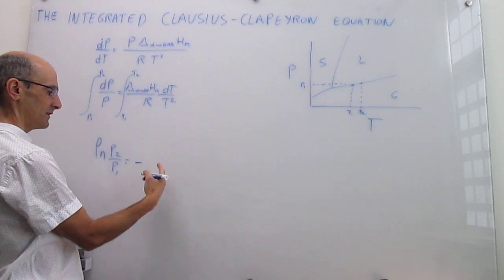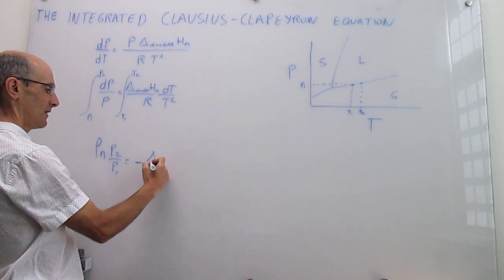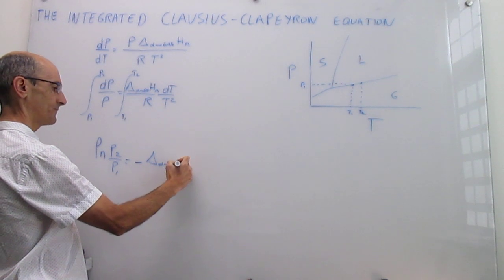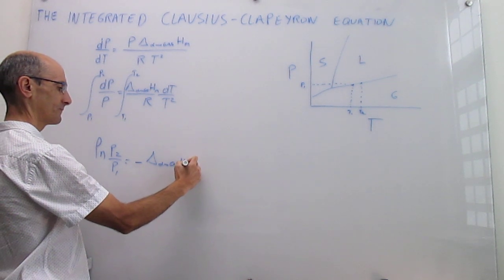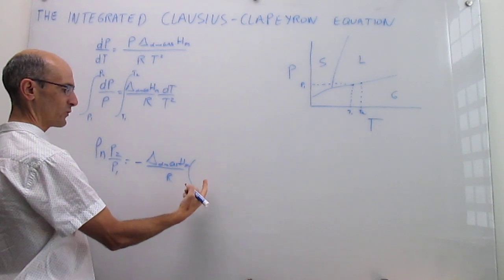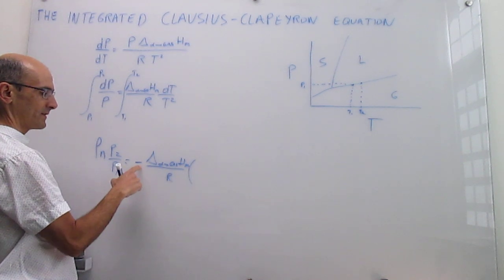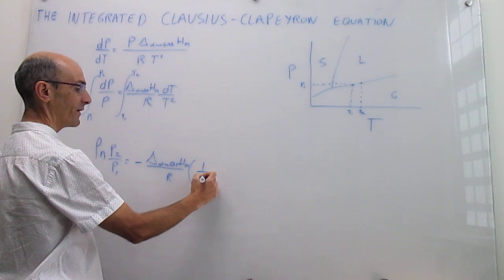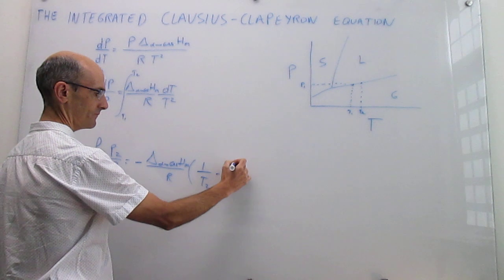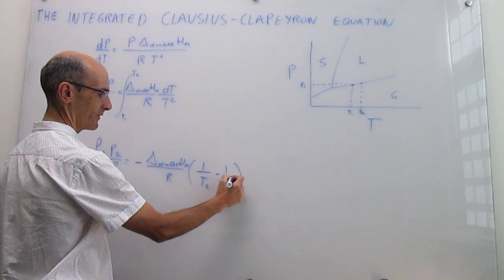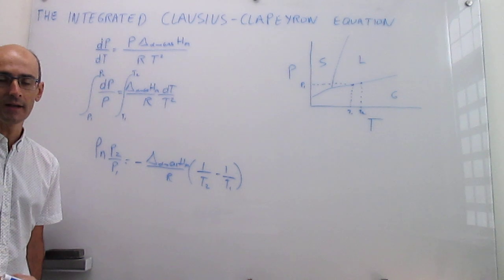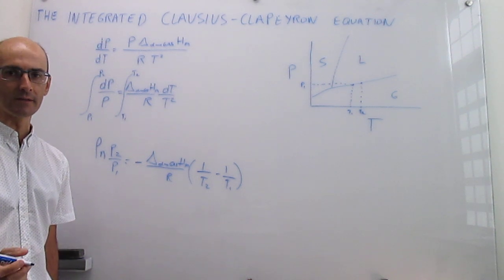The result is: ln(P2/P1) equals the change in enthalpy of the phase transition divided by R, multiplied by (1/T_final minus 1/T_initial) — with the minus sign already factored out. This is the integrated Clausius-Clapeyron equation with definite limits. It allows you to predict another point on the phase boundary if you know one point T1, P1.